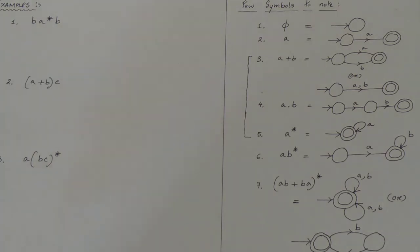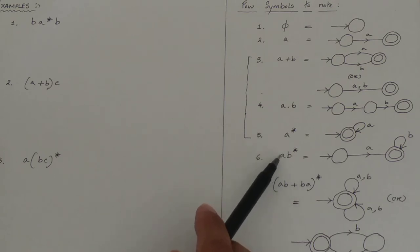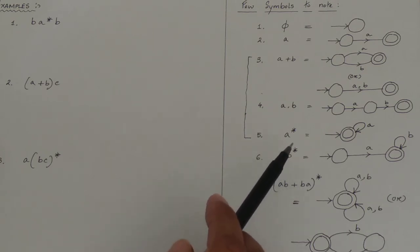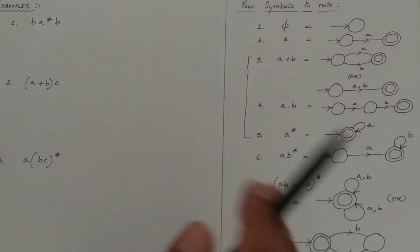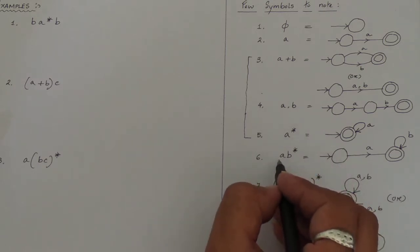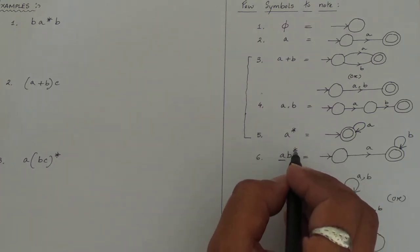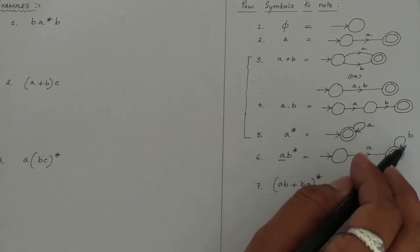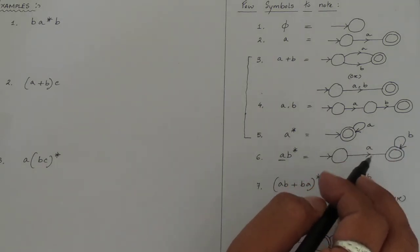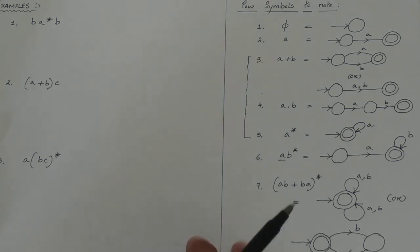Moving to the sixth expression: (ab)*, meaning a dot b whole to the power star. Since it is a dot b, 'a' and 'b' will be on different transitions. Starting from the initial state, 'a' has one transition leading to a state, and then 'b' has another transition. Because of the star, I make a self-loop for 'b' on that intermediate state. So 'a' and 'b' are on different transitions, forming the (ab)* structure.